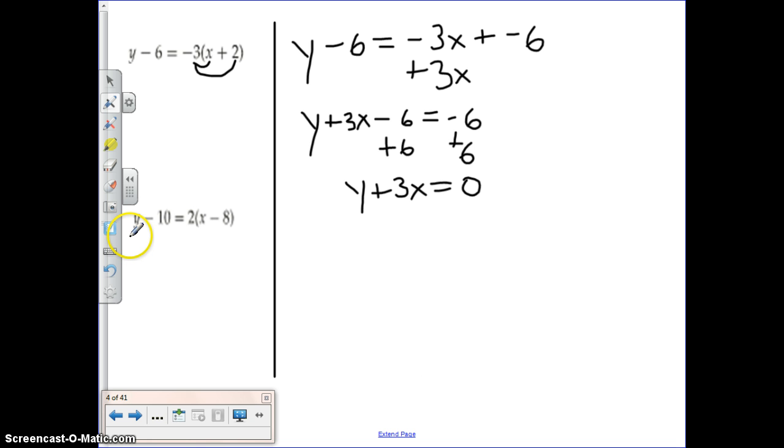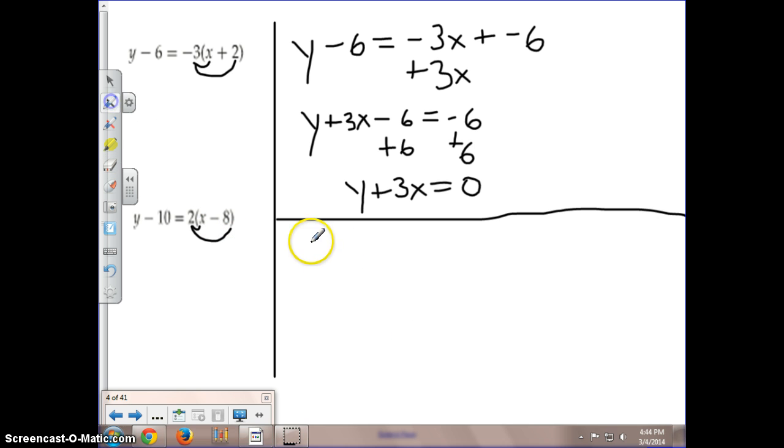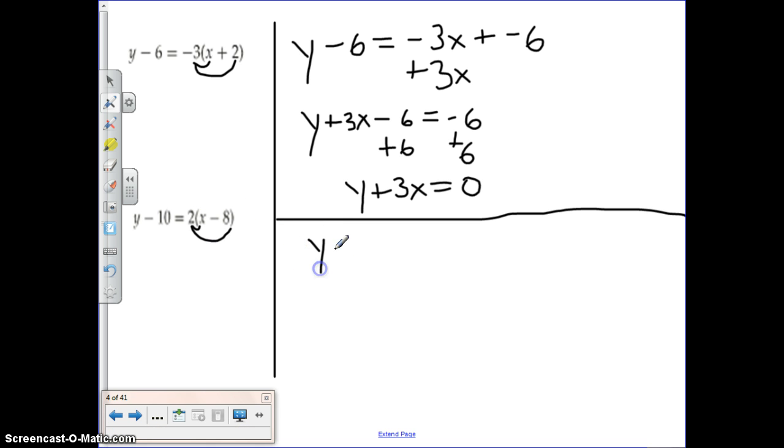Let's take a look at the next example here. So I have y minus 10 is equal to 2 times x minus 8 in parentheses. So remember I have to distribute that 2 first. So I distribute my 2, and so I have y minus 10 is equal to 2x minus 2 times 8, which is 16.